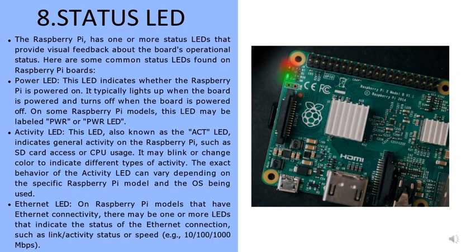The next part is the status LED, which provides visual feedback about the board's operational status. The power LED indicates whether the Raspberry Pi is powered on — it lights up when the board is powered and turns off when powered off. On some models, this LED may be labeled PWR or PWR LED. The activity LED, also known as the ACT LED, indicates general activity on the Raspberry Pi such as SD card access or CPU usage, and may blink or change color to indicate different types of activity.